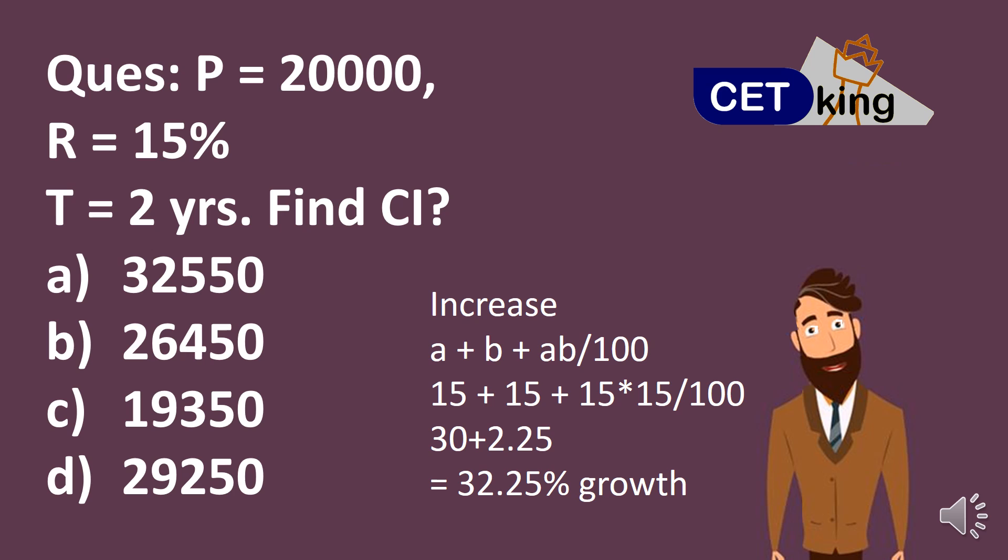32.25% growth over 20,000. So it was 20,000. 32 point double, 64. So 20,000 plus 6400. 26,450, option B. Done.